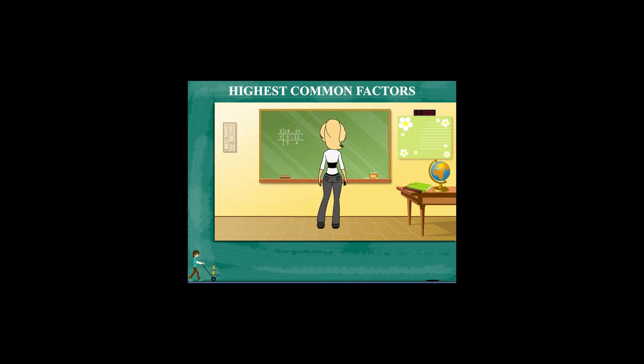Rosi ma'am now multiplies these factors. 2 into 3 into 3 equals 18, and 2 into 3 into 4 equals 24.